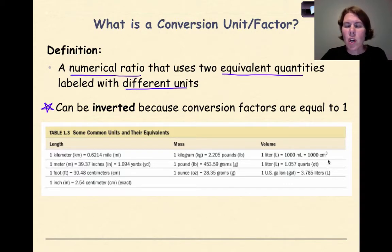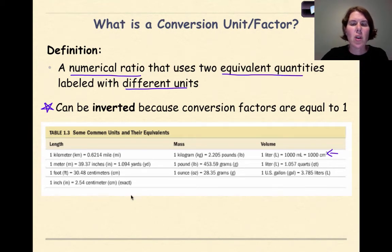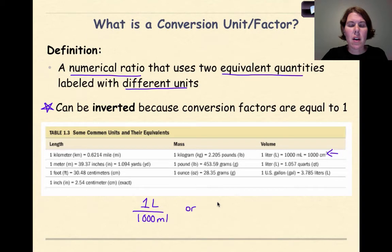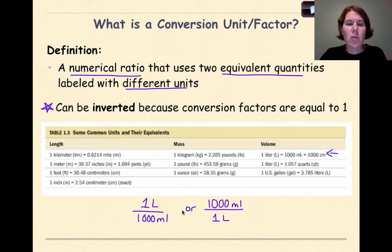For example, looking at one liter equals 1,000 milliliters — when I set that up as a numerical ratio, I could set it up as one liter over 1,000 milliliters, or I could set it up as 1,000 milliliters over one liter. As we go through this tutorial, you'll figure out which one you want to use, and it's totally going to be a case-by-case scenario.